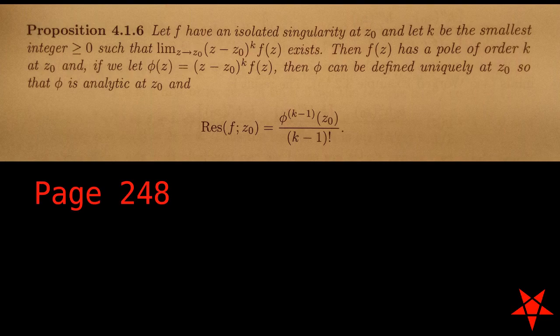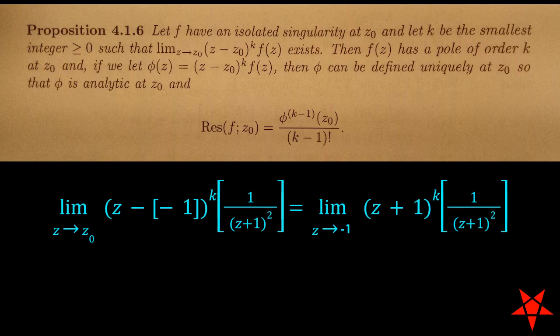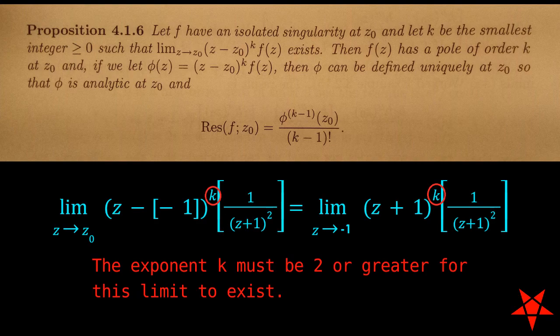Looking at the limit listed in Proposition 4.16 on page 248, we see that for our value of f of z and a value of z0 equal to negative 1, the limit only exists for exponents of z minus z0 at or above 2, the implication being that k equals 2 for the purposes of Prop 4.16.